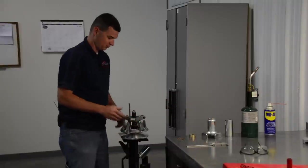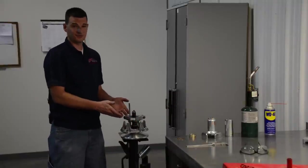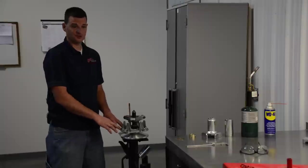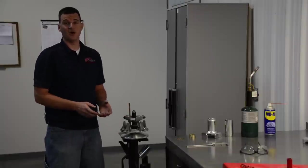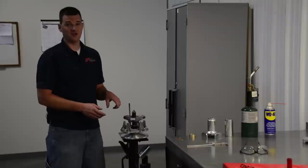All right, now that we've got the spider loose, we'll go ahead and remove it. Use the glove because it's still going to be hot. Then we'll remove the stock shims and the movable sheave. We'll set them aside. Then you'll want to take a wire brush and remove any residue from the thread locker that's left on the threads.